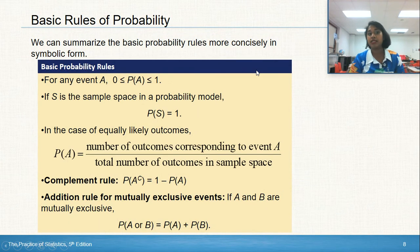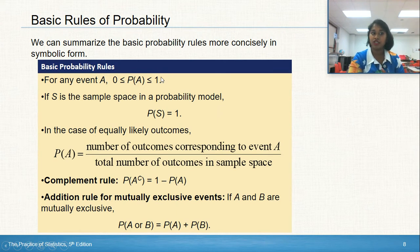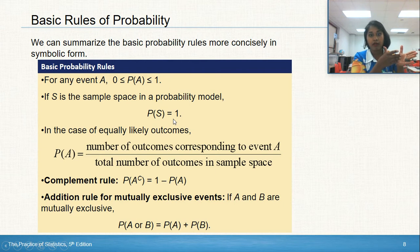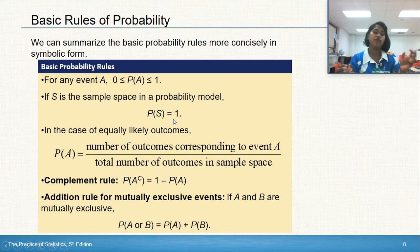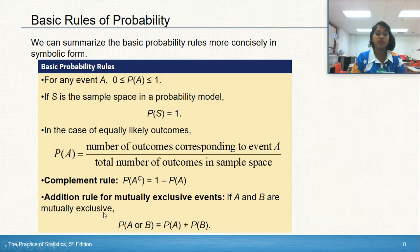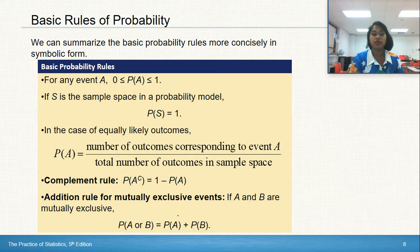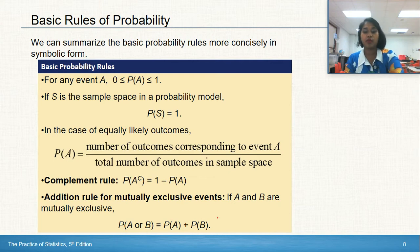Let's see those same concepts in symbolic notation form. All probabilities occur between zero and one. The sample space must sum to one — P of S equals one. For equally likely outcomes, here's that formula again. And then we have the complement rule: one minus the event you're excluding. For mutually exclusive events, if A and B can't interact with each other, adding their probabilities gives zero overlap — their intersection is zero.